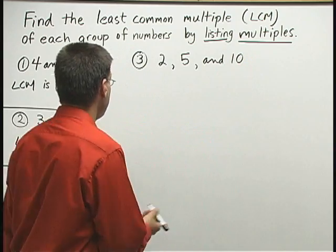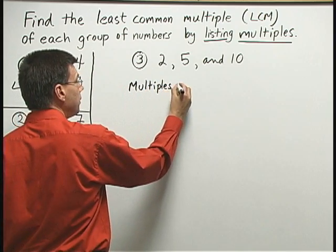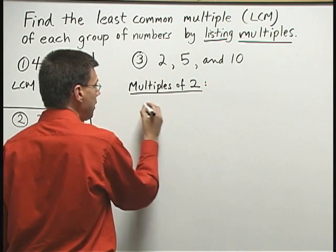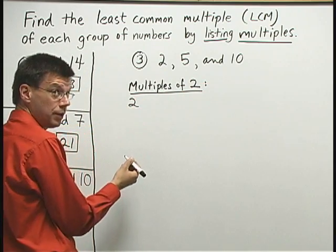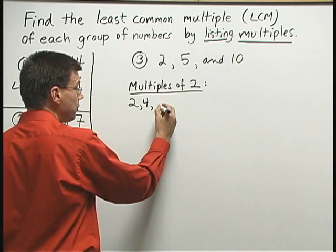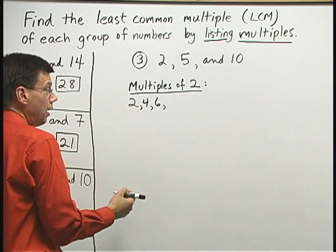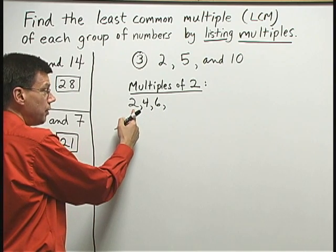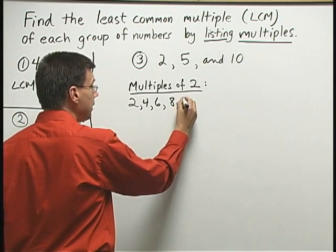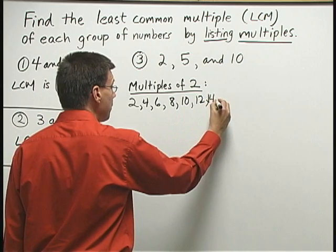Now I'll start out by listing multiples. The multiples of 2 start out 2. That's 1 times 2. 2 times 2 is 4, 3 times 2 is 6. In fact, the multiples of 2 are just the same as the numbers you get when you count by 2: 2, 4, 6, 8, 10, 12, 14, so on and so forth.